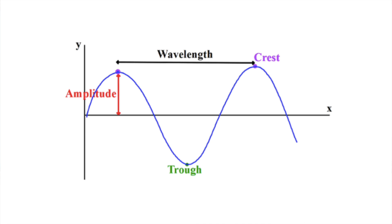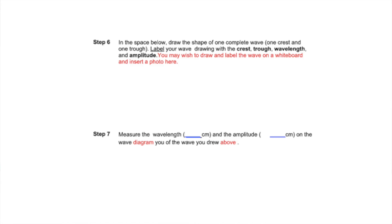Study this diagram of the parts of a transverse wave. You will be identifying these parts in the next few activities. Now turn to step six at the top of slide three. Draw the wave described in the directions onto a whiteboard, piece of paper, or directly into the slide and label the parts as directed.